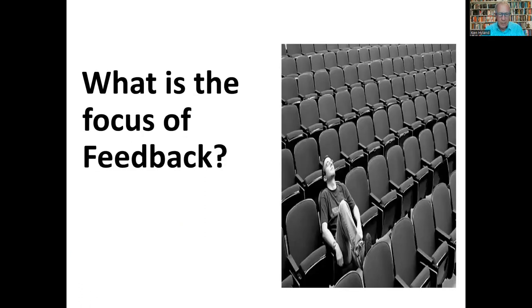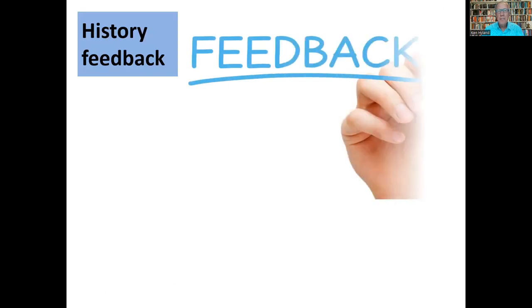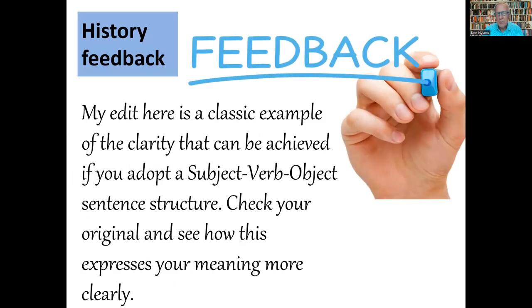So what do they give feedback on? Faculty members saw that language is not just grammar, but carries disciplinary meanings. The way a student expresses ideas is inseparable from the ideas themselves. Faculty in the humanities and social sciences offer more explicit commentary on language. This feedback from a history professor: my edit here is a classic example of the clarity that can be achieved if you adopt a subject-verb-object sentence structure. Check your original and see how this expresses your meaning more clearly.